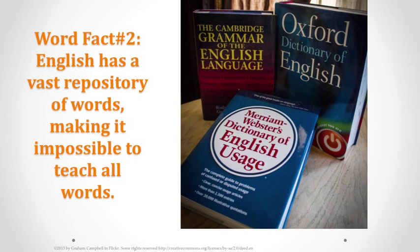The second word fact is that English has a vast repository of words. We simply can't teach all the words. English has even more words than most languages because it's an amalgam of two primary languages. At the foundation is Anglo-Saxon, which is a Germanic language, and that was layered with French during the Norman Conquest of England. These two languages were then embellished with words from Latin and Greek for technical scientific vocabulary. When we look at the unabridged Oxford English Dictionary, there are at least 600,000 words if we include archaic ones, and even more if we consider multiple meanings of words, such as bank in a river and bank in which we put our money.